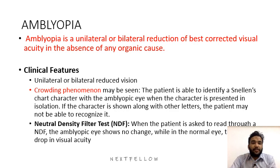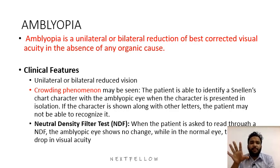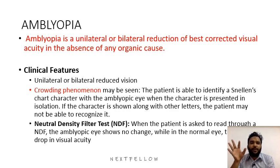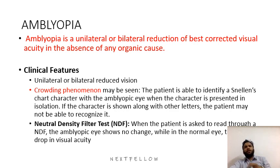Coming to our hot topic which is amblyopia: amblyopia is unilateral or bilateral reduction of best corrected visual acuity in the absence of any organic cause. You should always check the vision before telling the patient is amblyopic. It is a diagnosis of exclusion — the patient may have unilateral or bilateral reduced vision with best correction and there must not be any other macular or anterior segment findings.